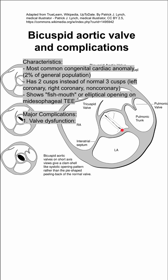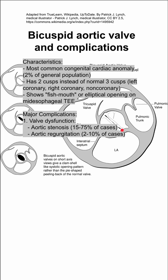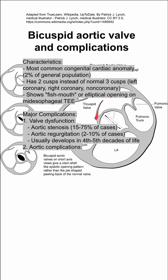Major complications include valve dysfunction. You can have aortic stenosis and aortic regurgitation, and it usually develops in your fourth to fifth decades of life. So even though you're born with a bicuspid aortic valve, you might not develop an issue until many decades later.